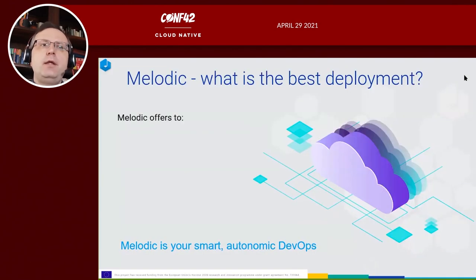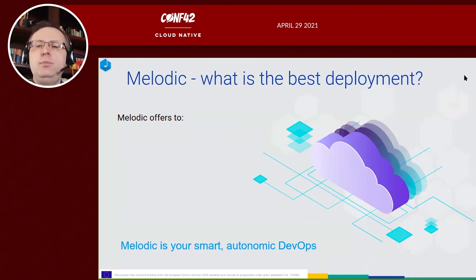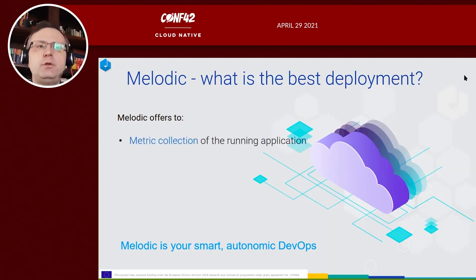The utility function defines what the best deployment is — how we know that the given deployment, given set of resources, is the best. One criterion is of course the cost, but if cost is the only goal, the best solution would simply be to not deploy anything, since the cost would be zero. In reality, we want to deploy our application, so it is usually a trade-off. Before optimization, we need to know the context of the application — how many resources are used, what is the performance, cost, and so on. And we do that through metric collection.